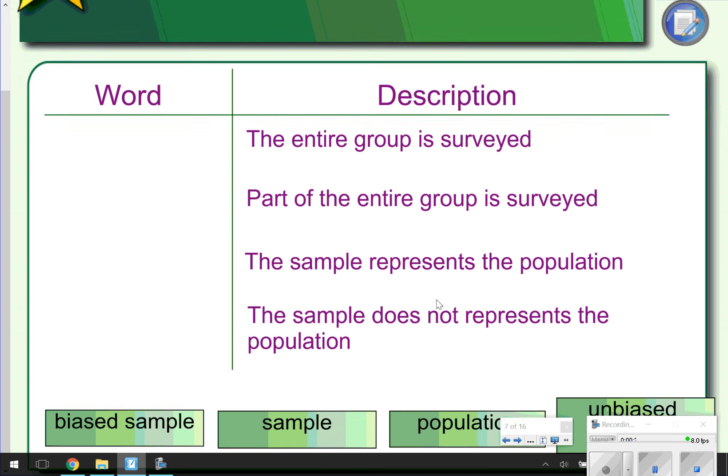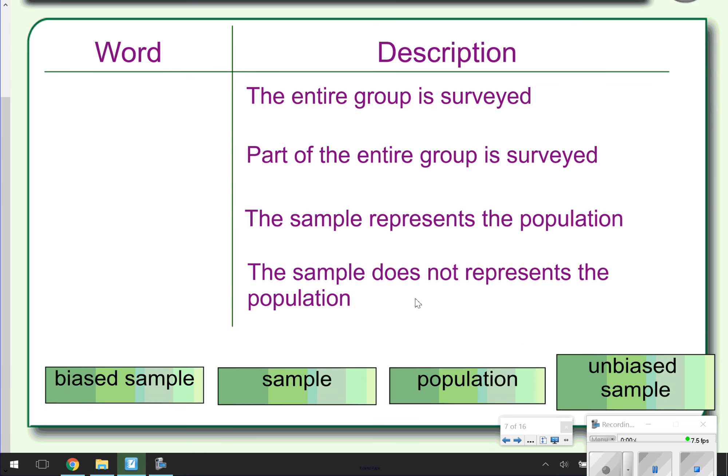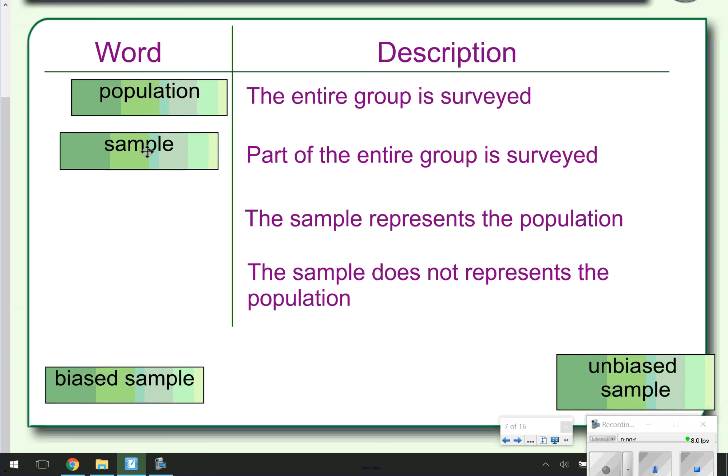These are just some examples and review words of keywords. We're going to start with when the entire group is surveyed, that's considered a population. When part of the entire group is surveyed, and sometimes this is the easier way to sample or to survey a group of people, that's going to be considered the sample.